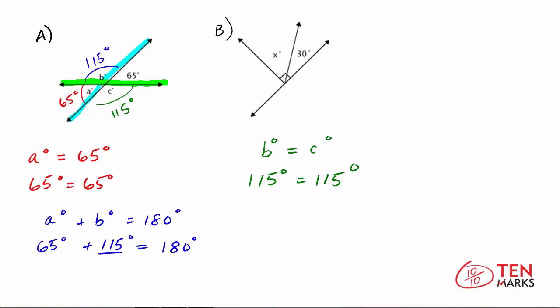Now let's go over to diagram B. We want to find the measure of angle X. I notice the little square indicating that the angle between these two lines is 90 degrees. So 30 degrees, which is given, plus X degrees must give a total of 90 degrees because they fit inside this right angle — this is called complementary angles. What's the missing value? 30 plus what number equals 90? 30 plus 60 equals 90, so the missing angle measurement is 60 degrees.